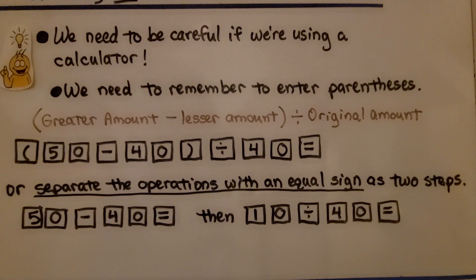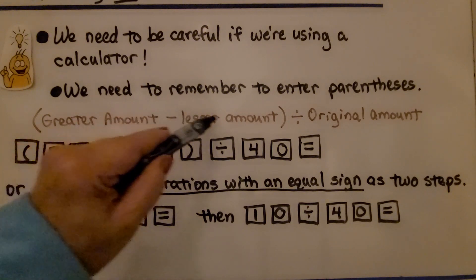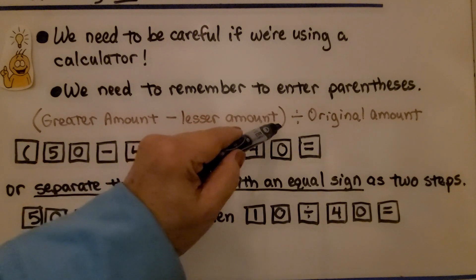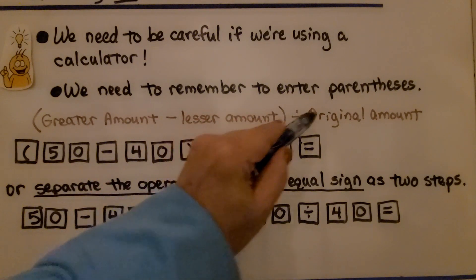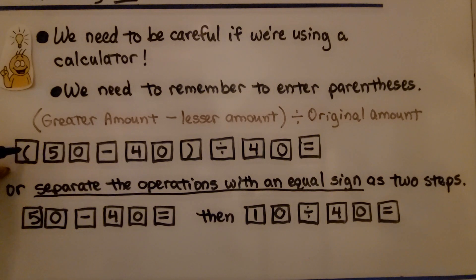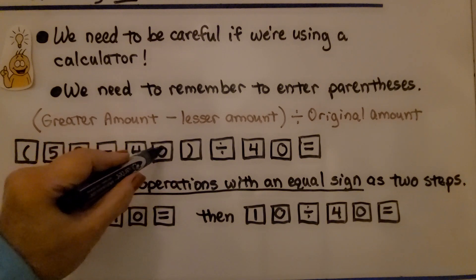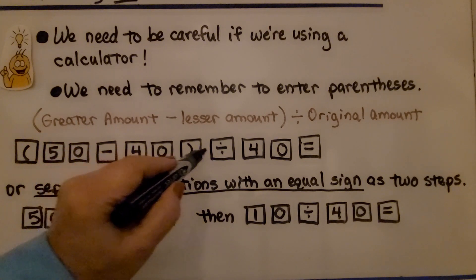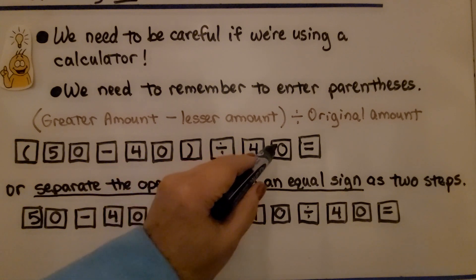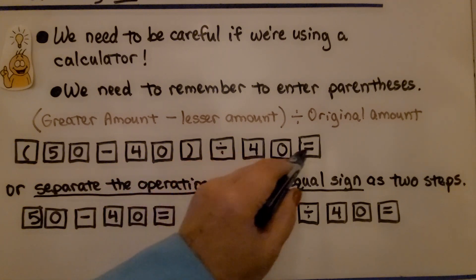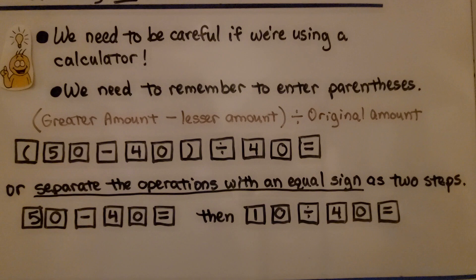We need to be careful if we're using a calculator. We need to remember to enter parentheses. We would do parentheses, the greater amount, minus the lesser amount, close parentheses, then divide by the original amount. So you'd hit the first parentheses key, 5, 0, minus 4, 0, close parentheses, the division key, and then 4, 0, because that's the original amount, 40, and then the equal key.